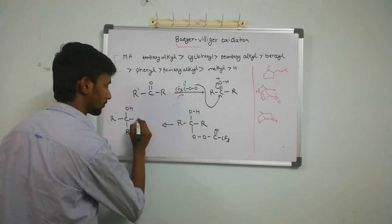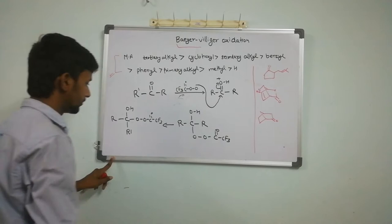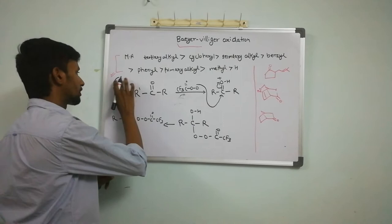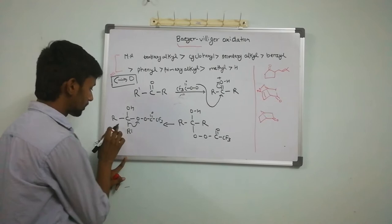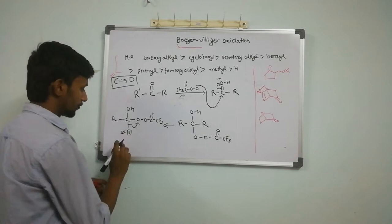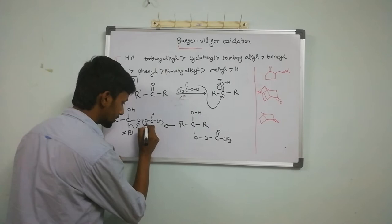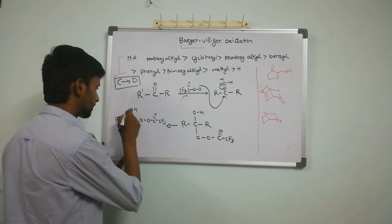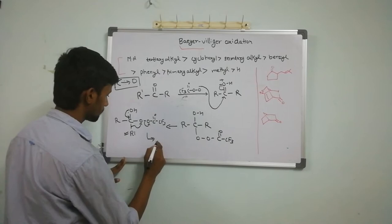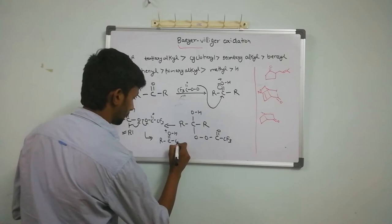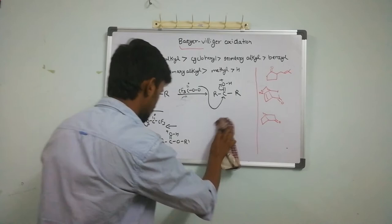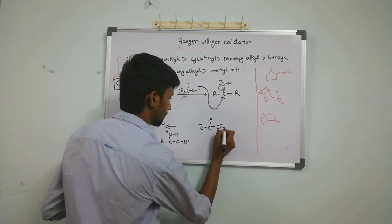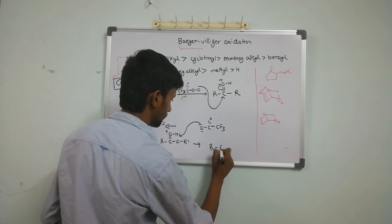It is a rearrangement type of reaction in which carbon-to-oxygen rearrangement takes place. This alkyl group — either R or R' — migrates depending totally upon the migratory aptitude. Suppose R' has higher migratory aptitude, so it will migrate. Before this migration, it is compulsory that the oxygen carries the positive charge. Then the anion will remove this proton, and our final product will be an ester.